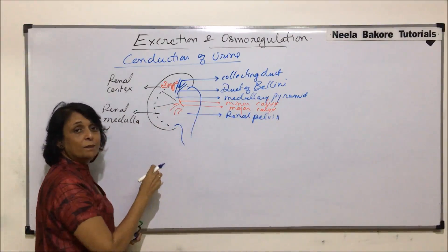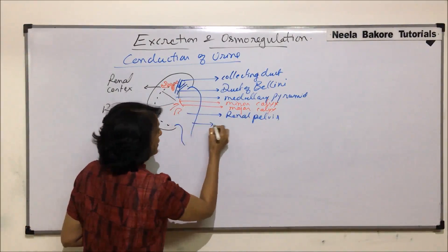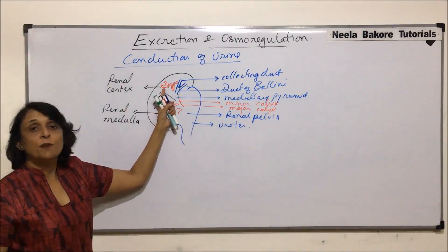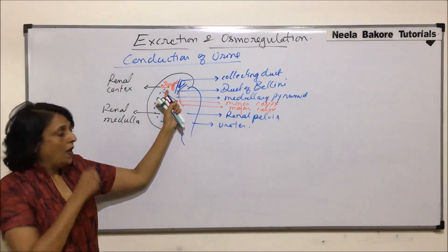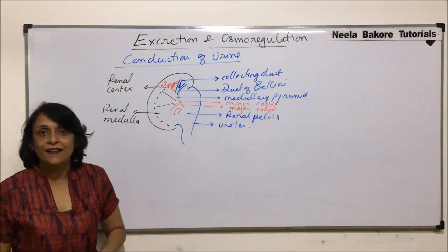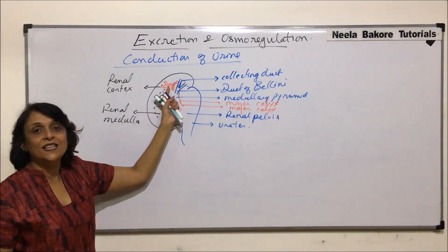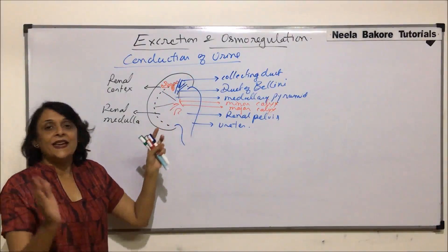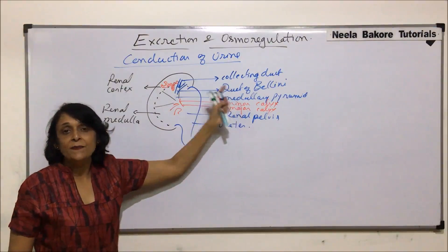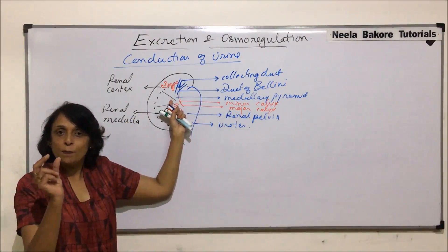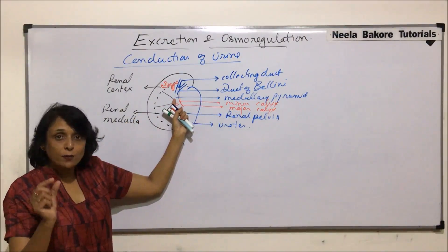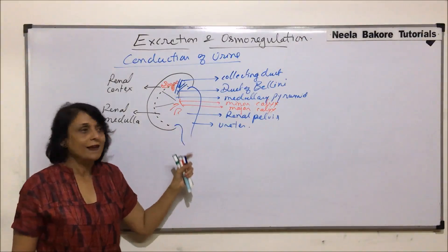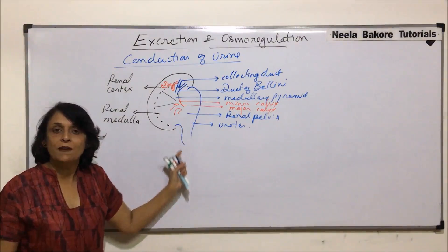From the renal pelvis, the filtrate comes out through the ureter. The filtration which takes place in Bowman's capsule results in the nephric filtrate. This nephric filtrate passes through PCT, loop of Henle, DCT, and comes into the collecting duct. Many collecting ducts join to form the duct of Bellini, which opens into the pyramid. Pyramids open into minor calyx, minor calyces into major calyx, then into renal pelvis and ureter.